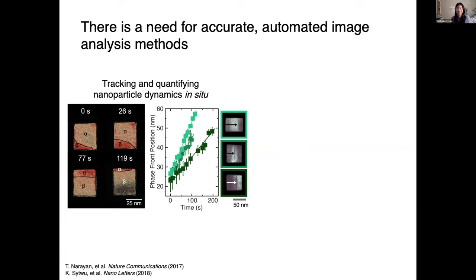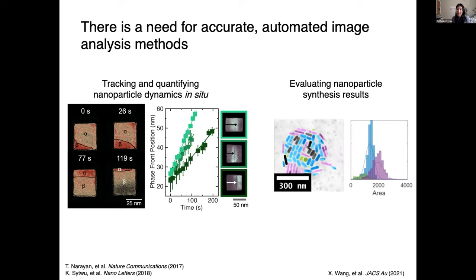As the person responsible for analyzing all those in situ TEM videos, you have to go frame by frame and do it for an entire video, and then do it for another video because you need particle statistics. It ends up being a lot of work. And when they say there's a new camera with an even faster frame rate — that's great for science, but your pile of work has now increased enormously. There's really a need to handle image processing much more automatically, and not just for video data. Whether it's evaluating nanoparticle synthesis results or reviewing microscopy images, all microscopists — whether electron, optical, or other — would really benefit from better image analysis methods.